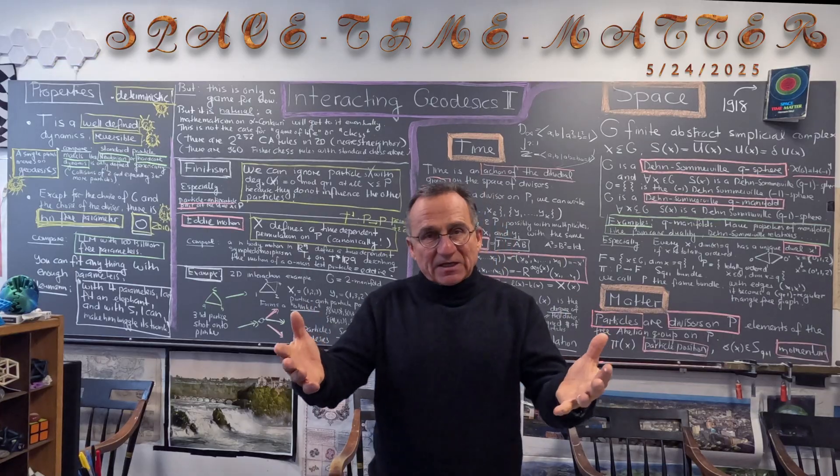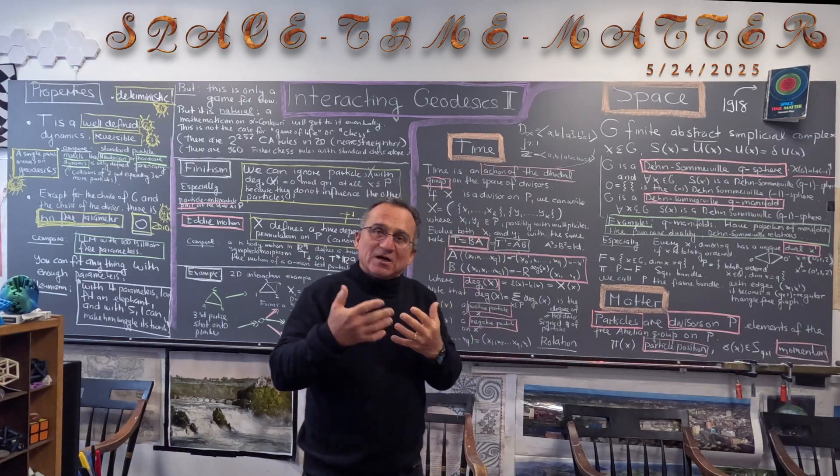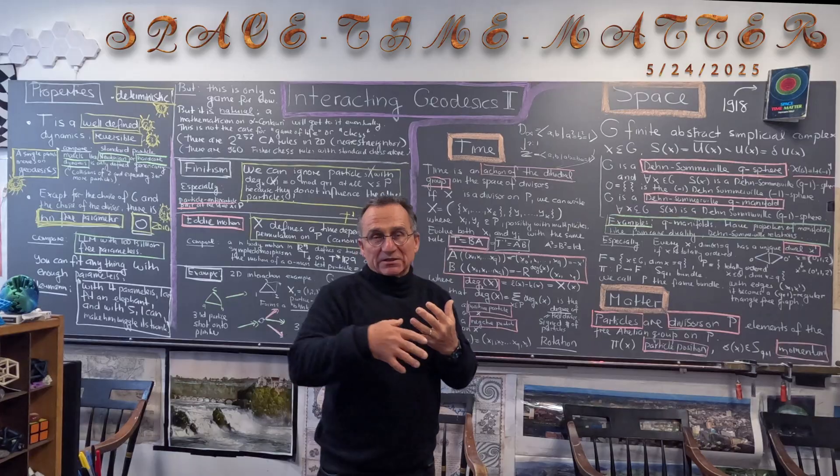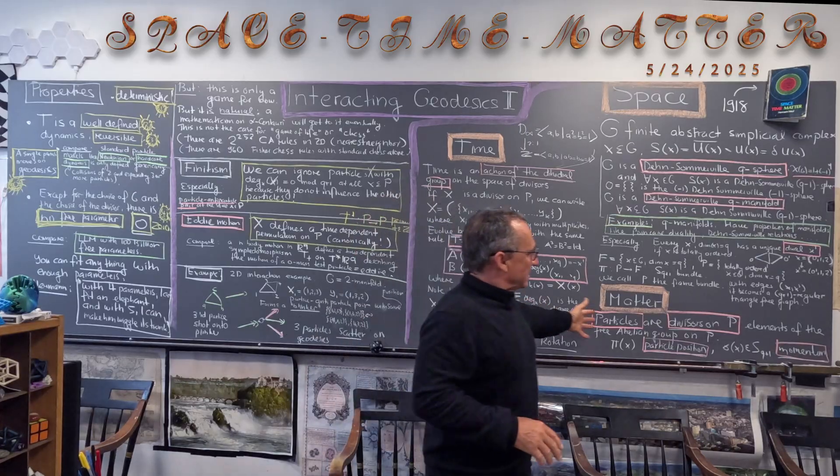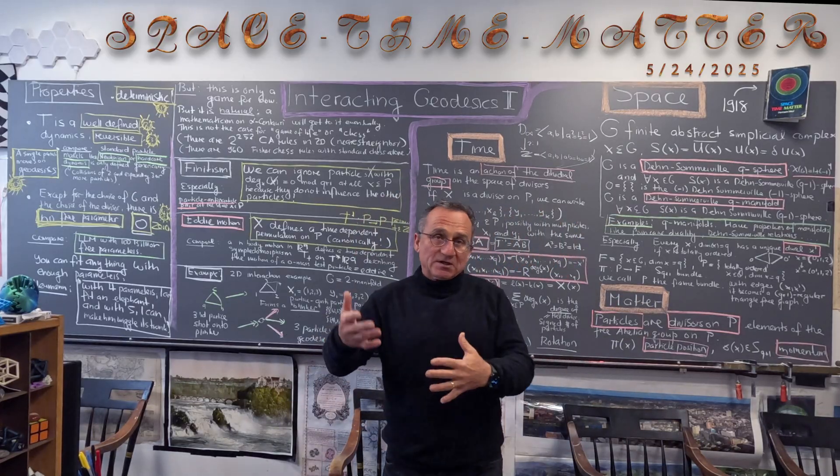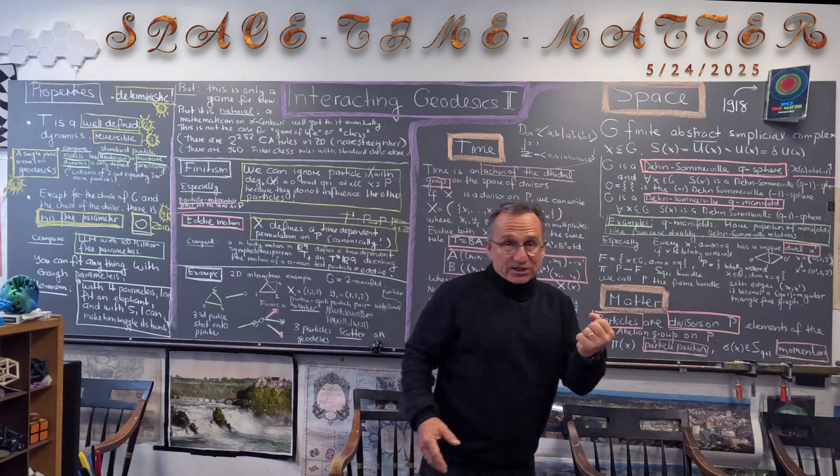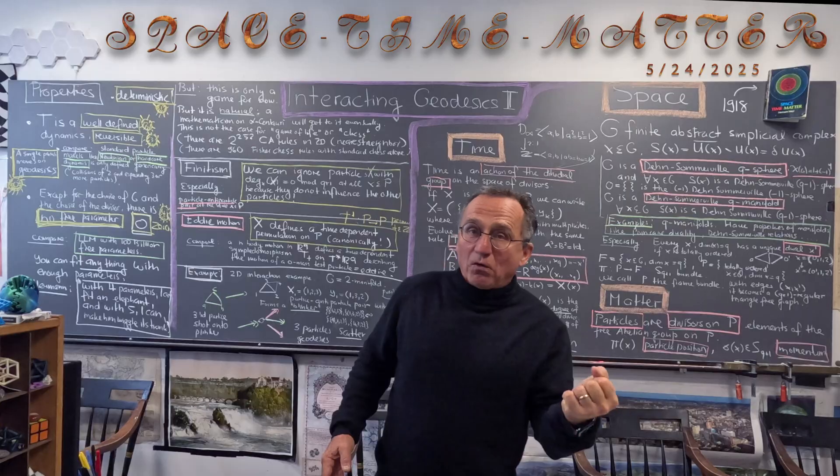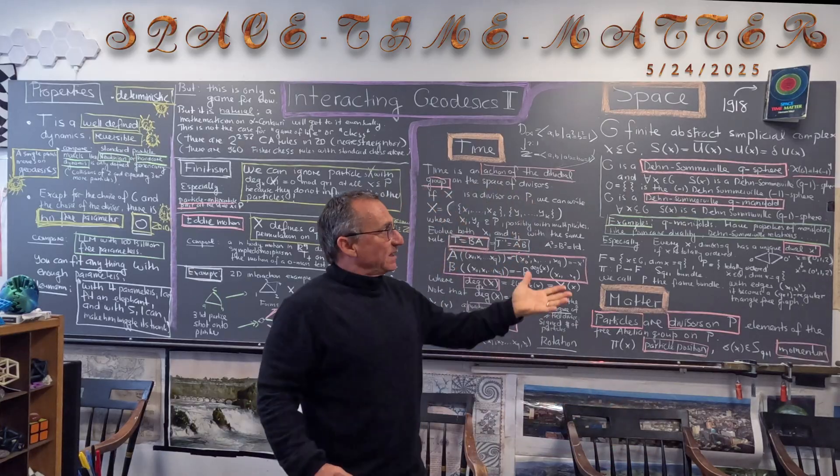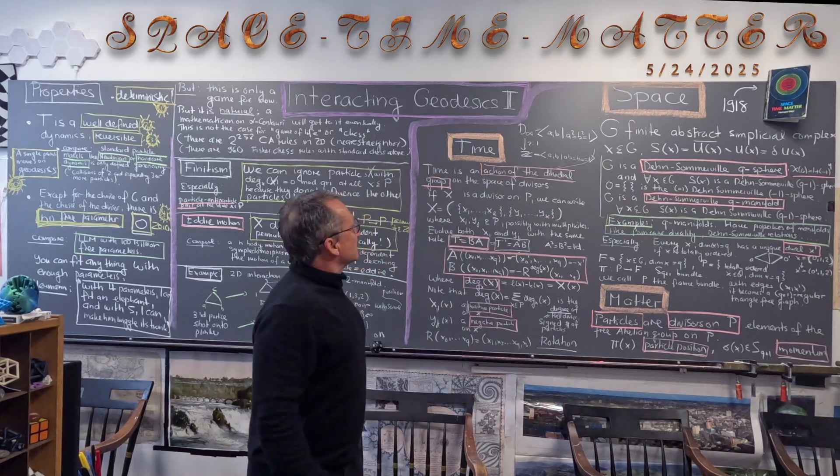So divisors also motivate why we want to have positive particles and negative particles. So in this case, divisors naturally have positive parts and negative parts. Also the particle position is actually just not ordered simplex. It's an element in the simplicity of complex. So that's matter.